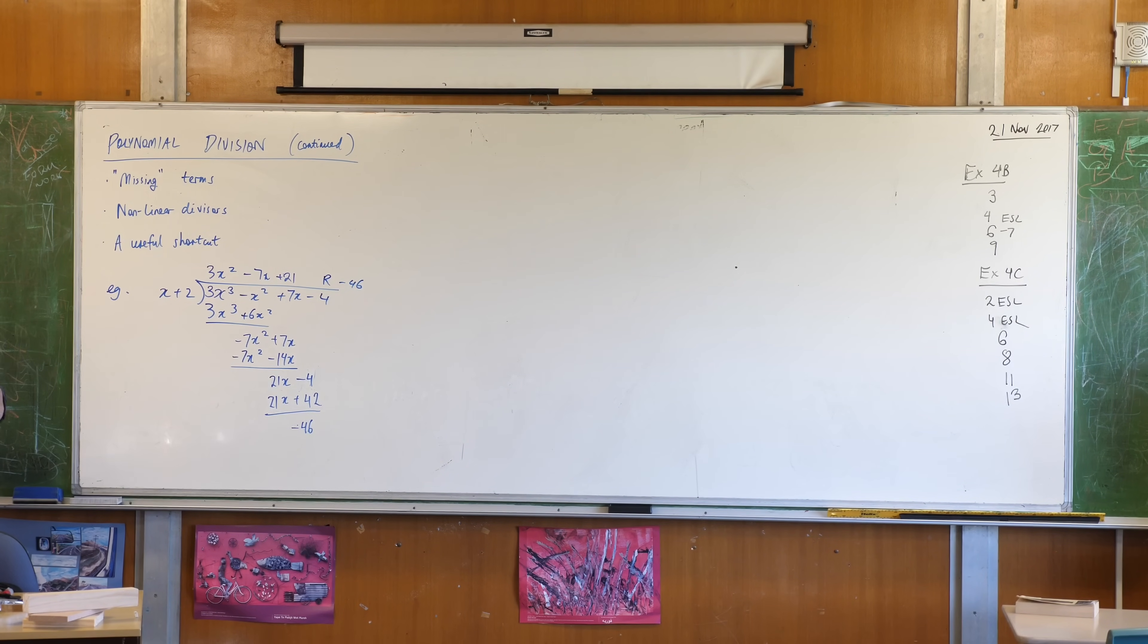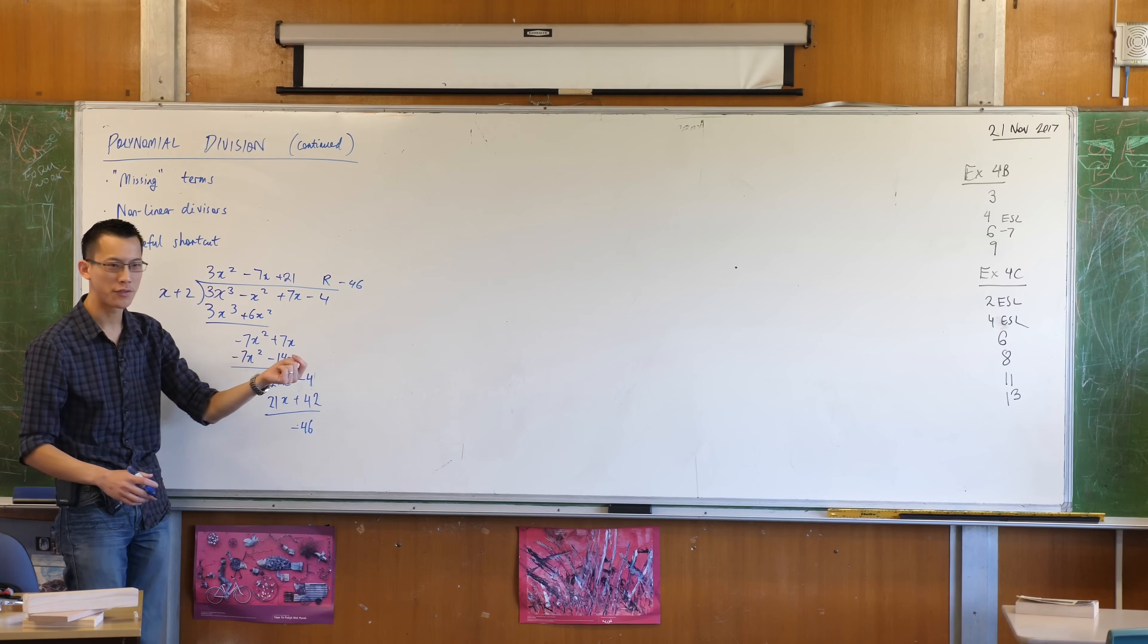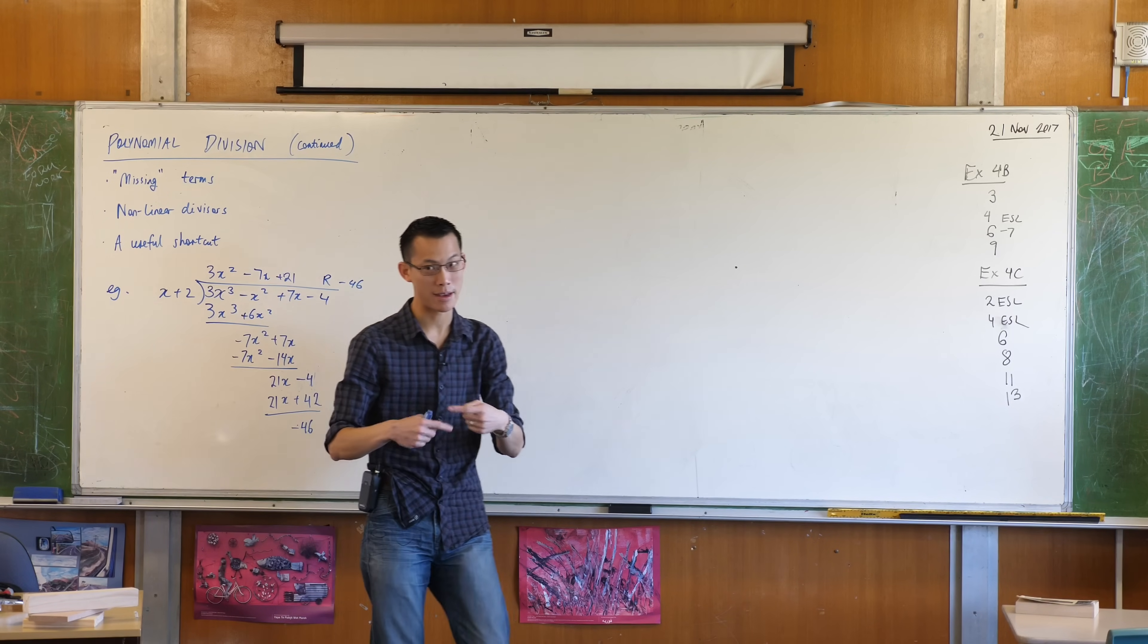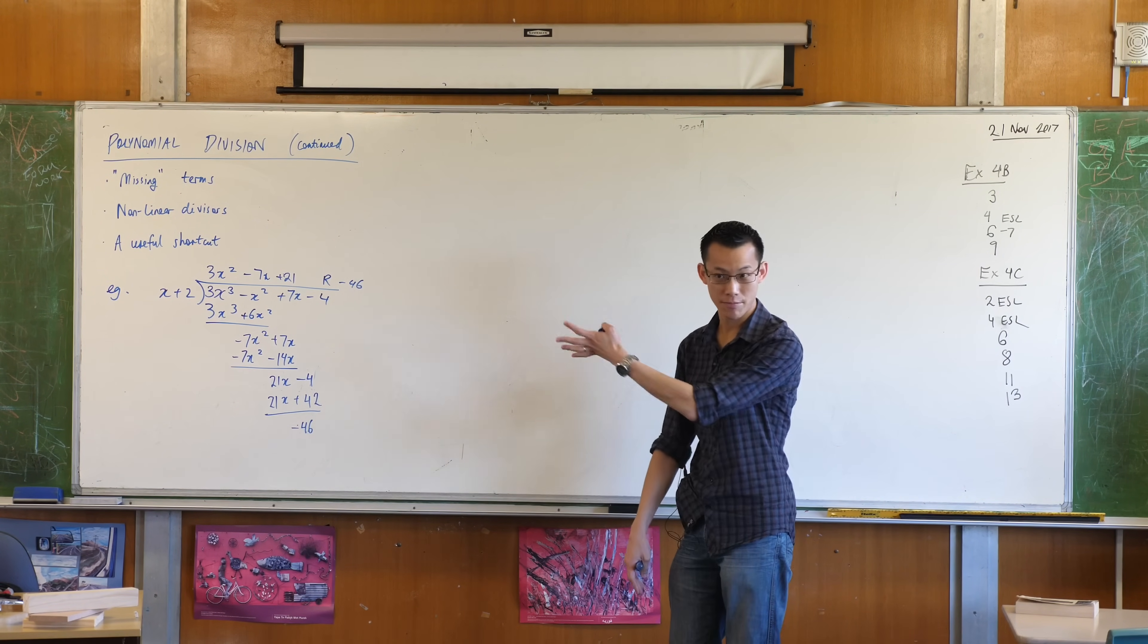Unlike in numerical long division, you can get remainders that are negative. It's a bit funny, isn't it, right? If you got a negative remainder, if you were dividing by numbers, you'd say you've done your division wrong. But that's fine. This is what this is.